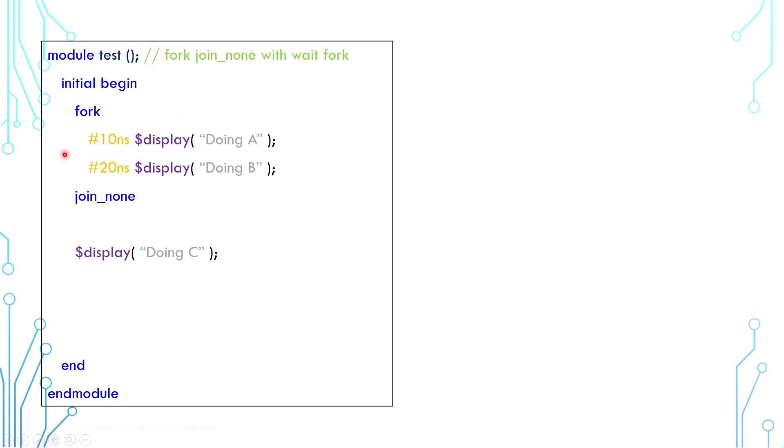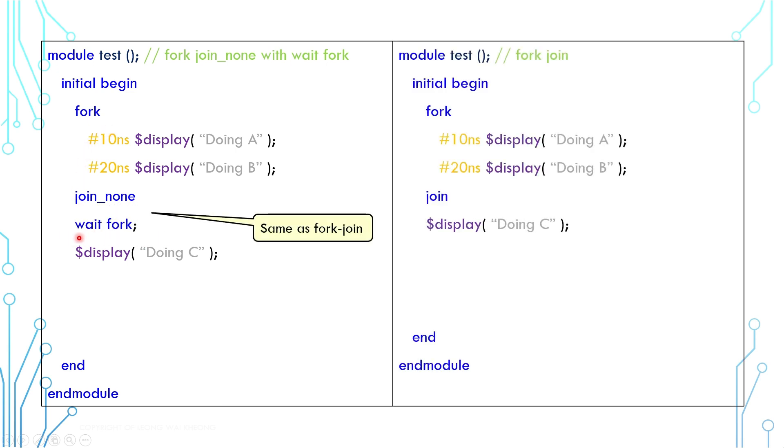Now, let's say for some reason, after launching the threads, we would want to wait for them to finish. We can use a wait fork statement here, but this would make fork join_none the same as a fork join construct.